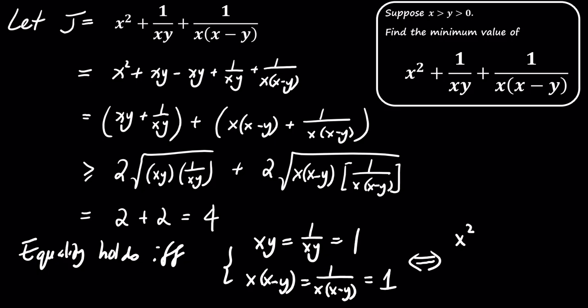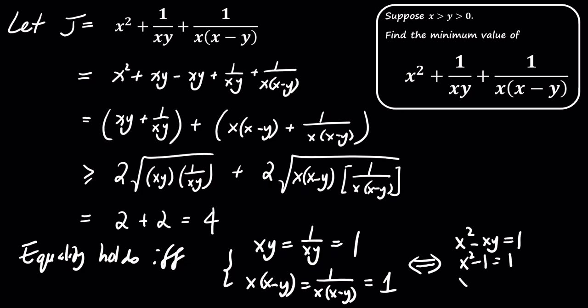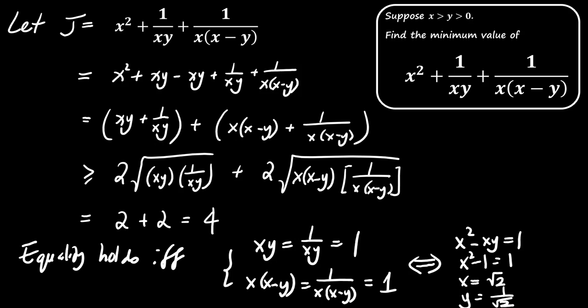From the first condition, we get that x times the quantity x minus 1 divided by x equals 1. This simplifies to the equation x squared minus 1 equals 1, which gives us x squared equals 2. So x is equal to the square root of 2. We find that y equals 1 divided by the square root of 2.